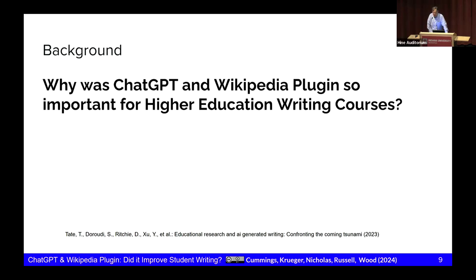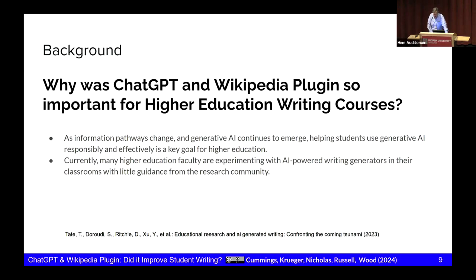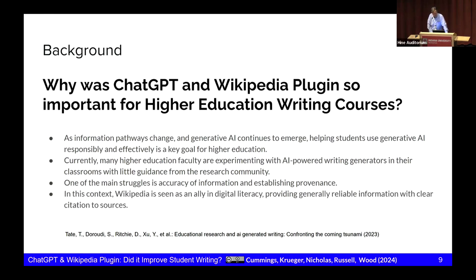Why was this important on the higher education side? Helping students figure out ways to use generative AI responsibly, effectively, and ethically is a key goal for higher education. A lot of faculty are experimenting with AI writing generators with little guidance from the research community. There's increasing research, but not a lot of consensus or high-quality guidance, so people are largely going on their own. One of the main struggles with accuracy of information is establishing provenance, and we saw that partnering with Wikipedia was a great avenue so that writers could see where information was coming from and how it was compiled. Wikipedia is definitely an ally in digital literacy.